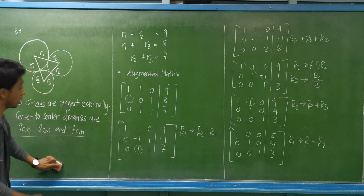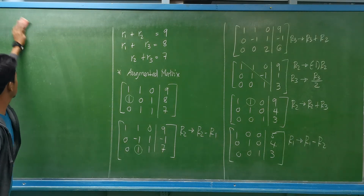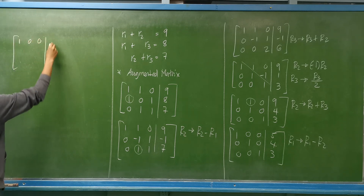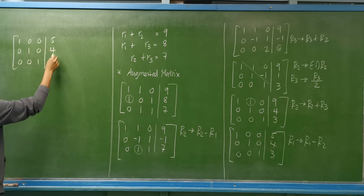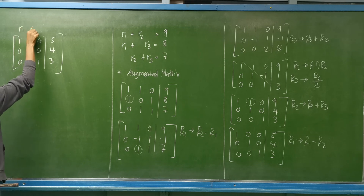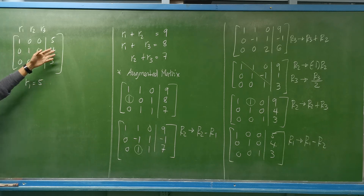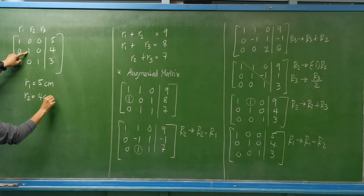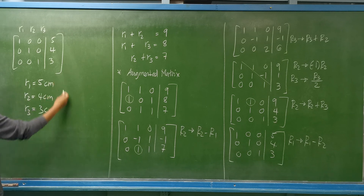As you can see, we can now read the radii of the three circles. From the final matrix — 1, 0, 0, 5; 0, 1, 0, 4; 0, 0, 1, 3 — radius R1 is 5 centimeters, radius R2 is 4 centimeters, and radius R3 is 3 centimeters. These are the radii of the three circles.